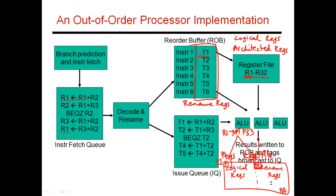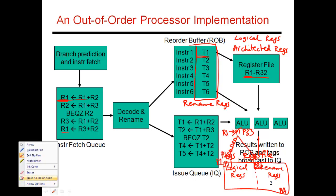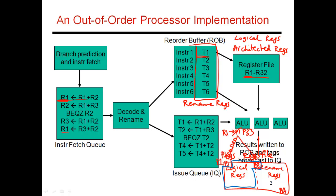What ends up happening is P1, which used to be part of the set of logical registers, now becomes free. It's a register I can use to put other values in because no one will ever care about the value that used to be in P1. Now if anyone wants to refer to R1, they'll refer to the value in P33, not P1. So P1 contains garbage and joins the list of free registers — it can be used by other instructions for renaming. This boundary I designed earlier keeps changing over time as registers get renamed.